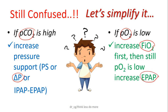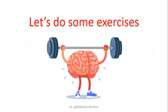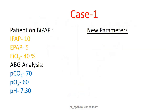That's very simple and easy to remember. Again: if CO2 is high, increase your pressure difference; and if O2 is low, increase FiO2 up to 60%, and if you still want to increase oxygenation, increase your EPAP. Now remember these two things and apply them in real-time patient scenarios. Let's do some exercises — stretch your brain and be ready. Let's begin with the first case. Here we can see IPAP is 10, EPAP is 5, so current pressure difference is 10 minus 5, which is 5.